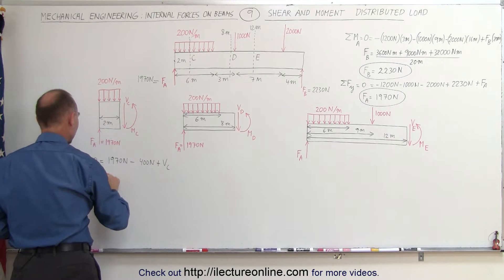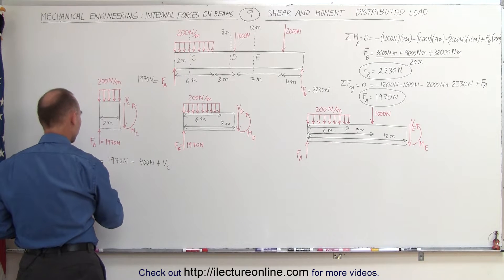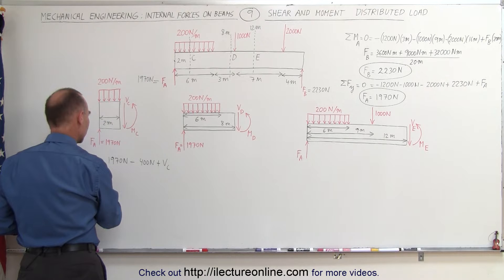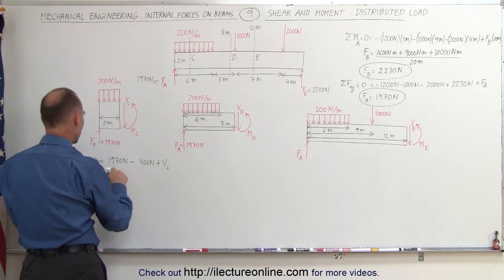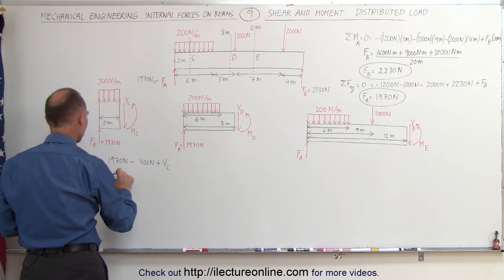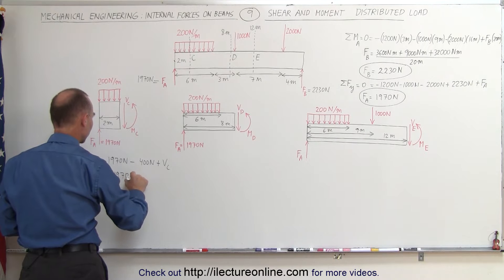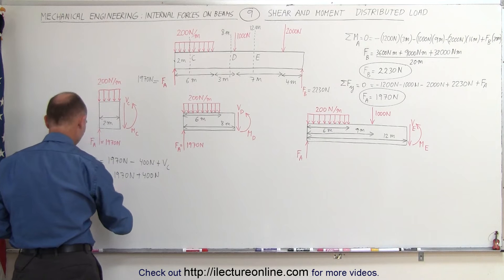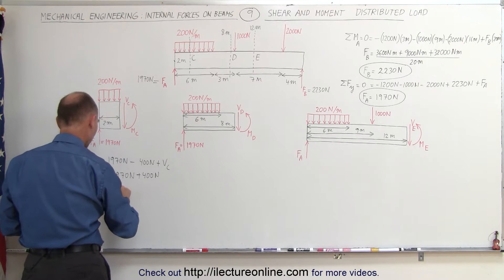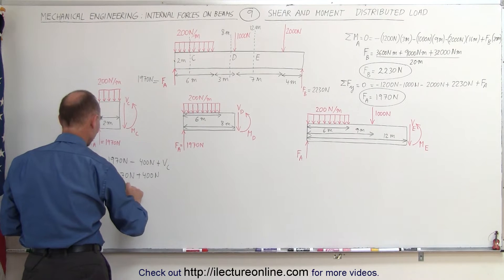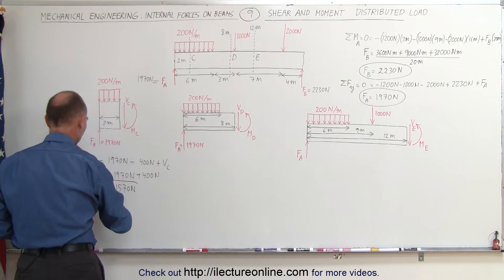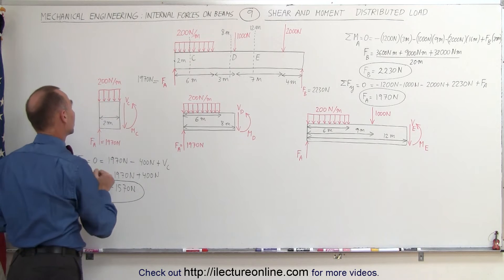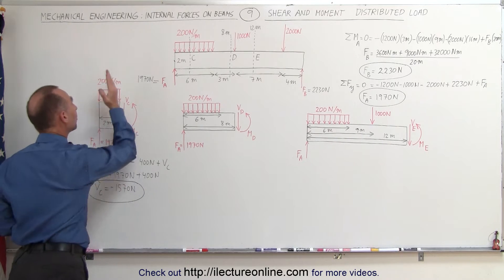Solving for V sub C: that would be minus 1970 N, and when we bring the 400 N across it becomes positive, giving us a negative shear force of minus 1570 N. Notice that if the shear force is negative, that means it's acting in the opposite direction from the way the arrow is drawn — so it's actually acting upward.